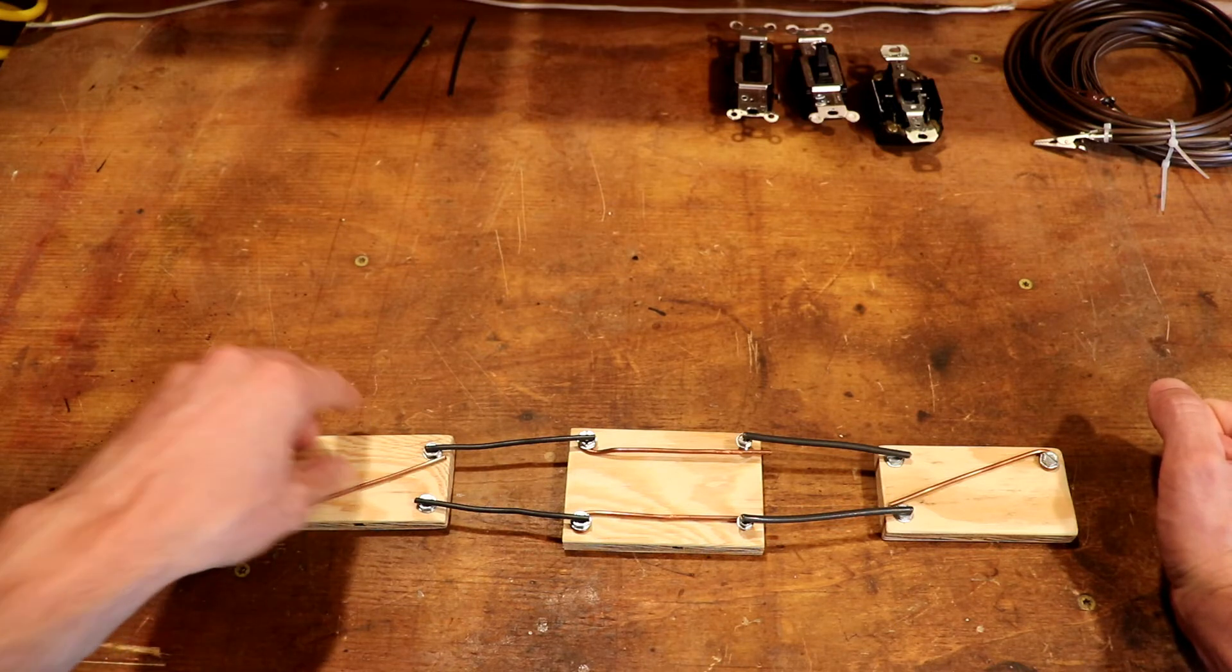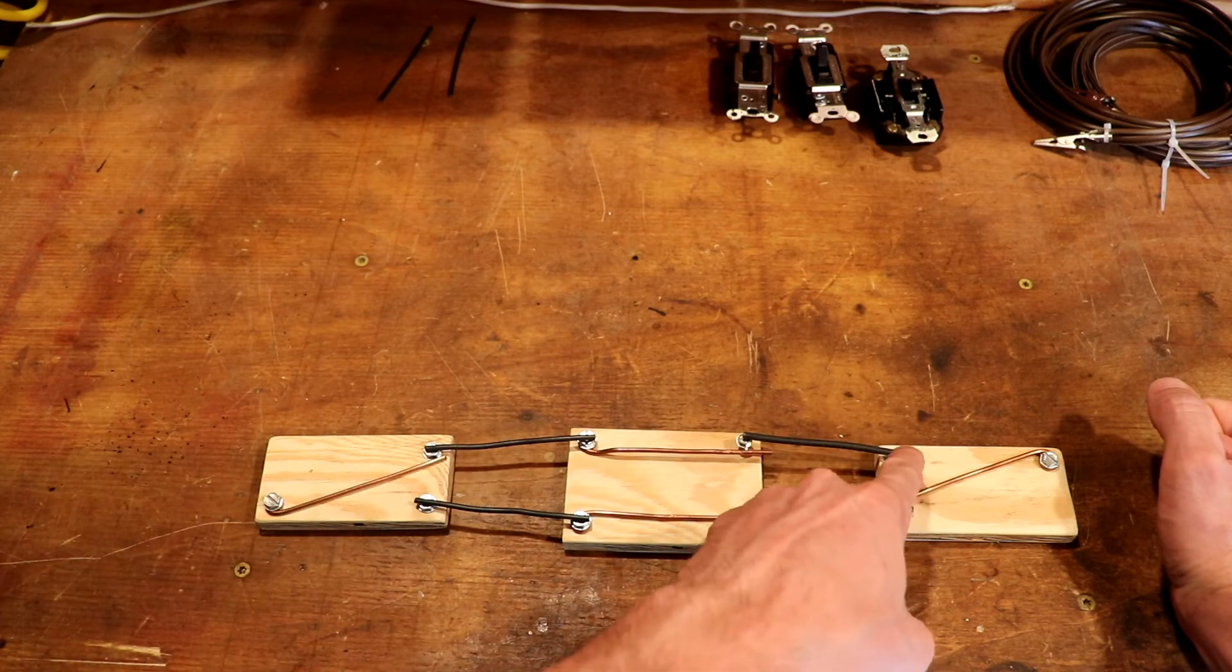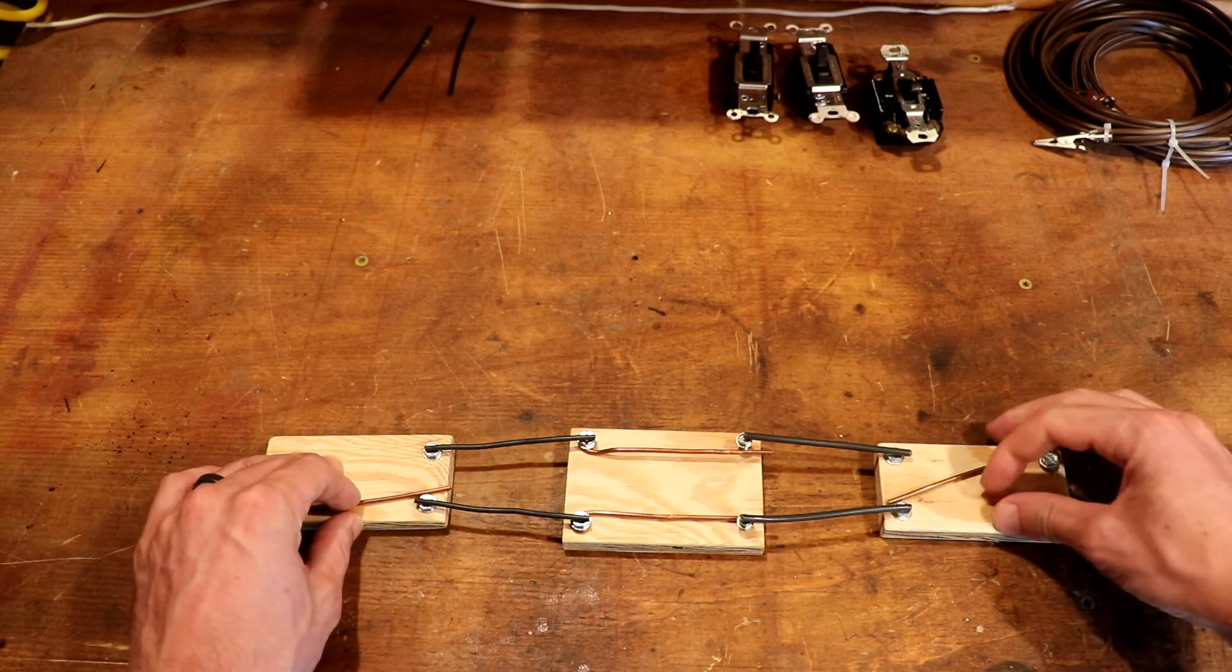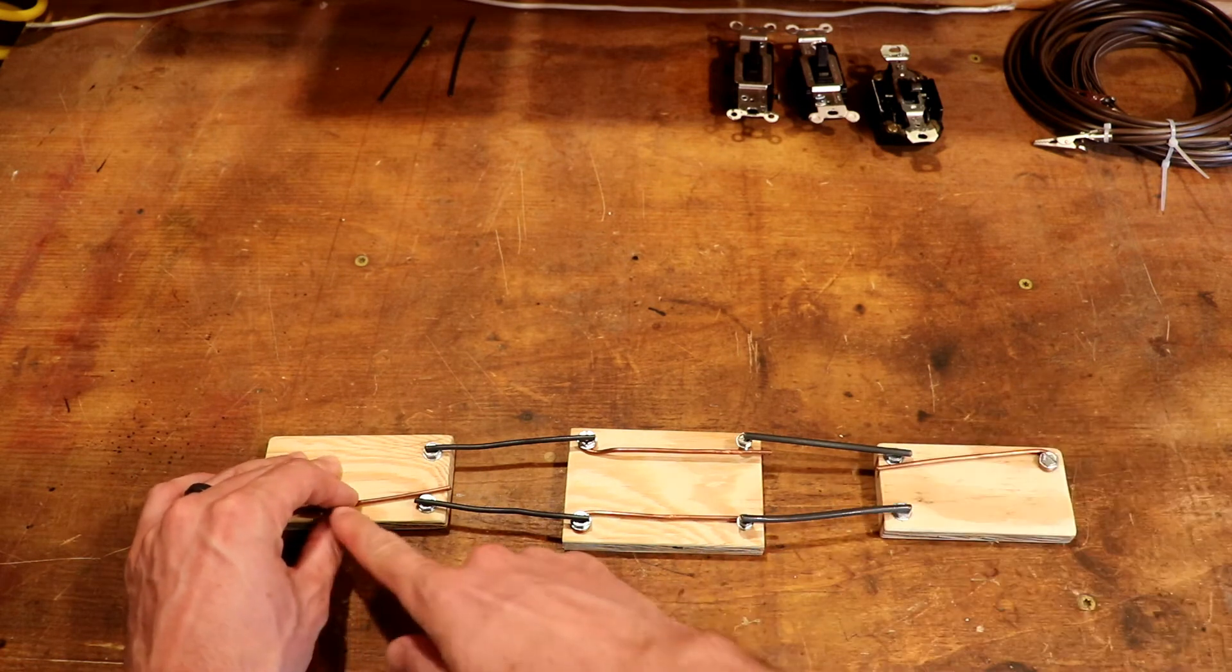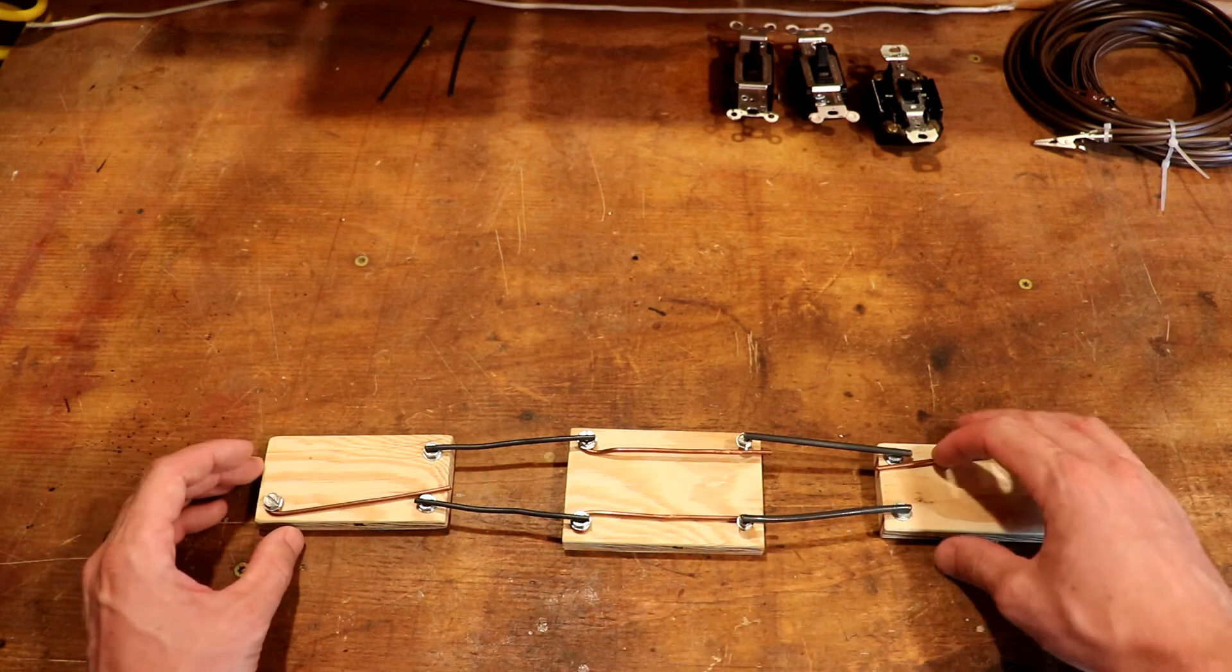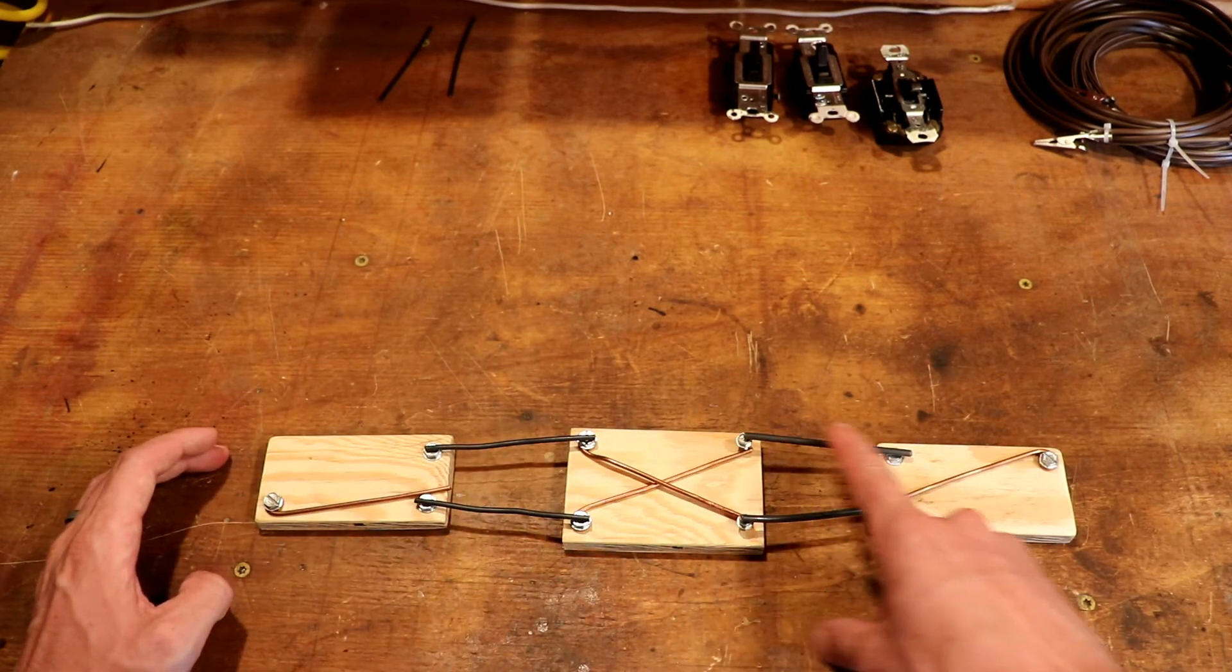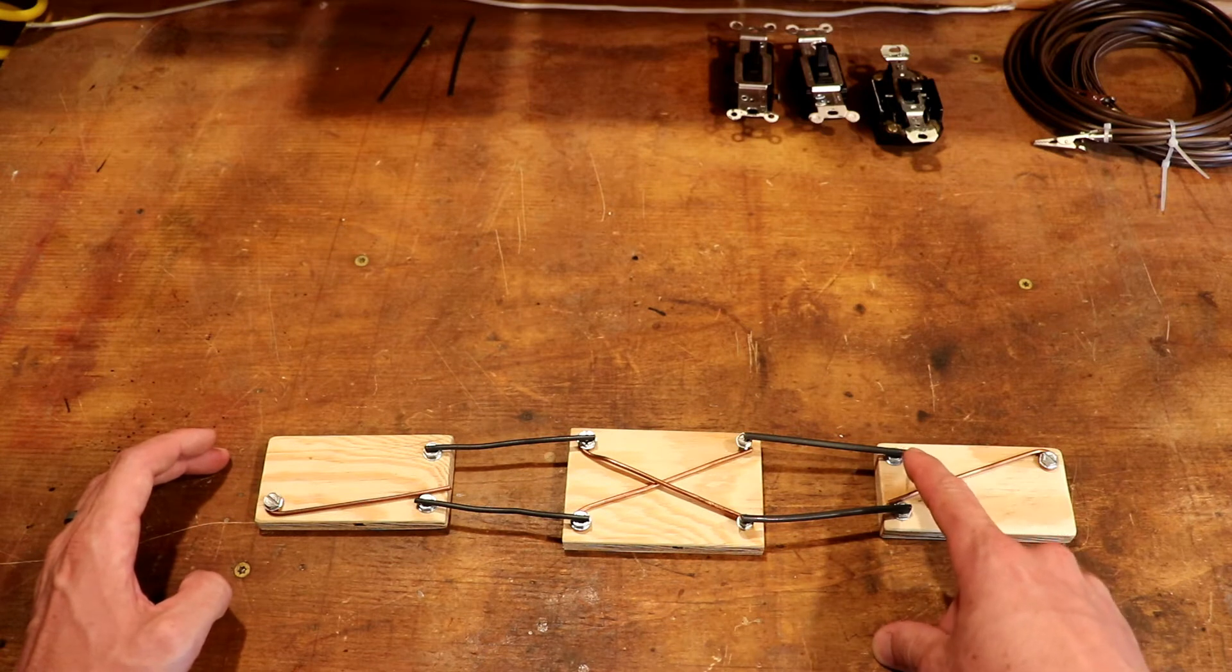We can flip that switch, follow it through and the electricity stops right there so power can't get to the light. We could flip this switch and do the same. Power flows through to here and stops. We could flip this middle switch and power would flow over to here and stop right there.